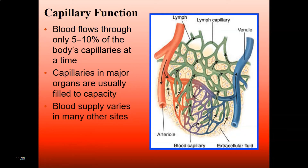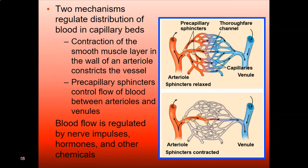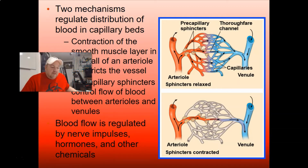Blood flows through only about 5% to 10% of the body's capillaries at a time. However, in major organs, capillaries are basically always filled to capacity because those organs are always working. Two mechanisms regulate distribution of blood in capillary beds: first, contraction of the smooth muscle layer in the walls of arterioles, and second, precapillary sphincters — little rings of muscle before the capillary that control how much blood flows through. These are also regulated by nerve impulses, hormones, and other chemicals as part of homeostasis.